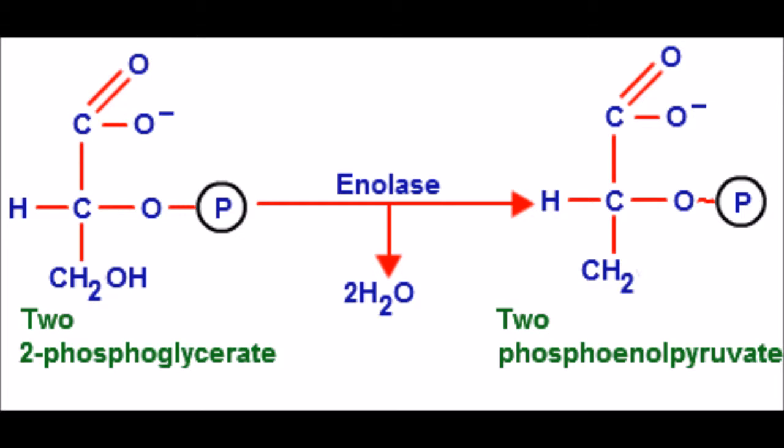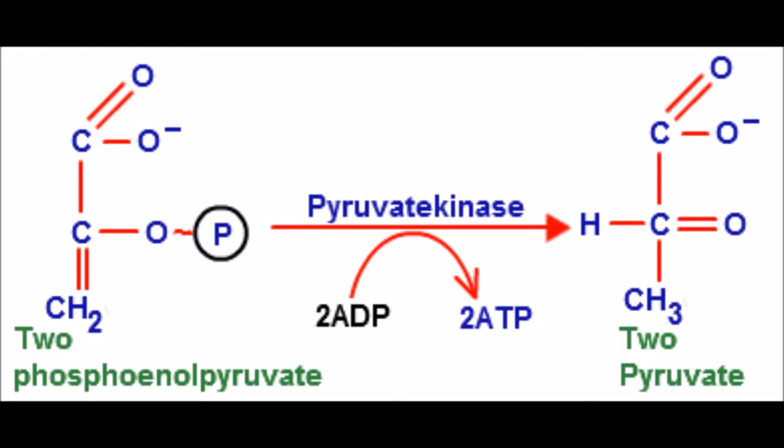2 pyruvate molecules, 4 ATP, and 2 NADH are produced. 2 ATP remain in the cell to be used during glycolysis.